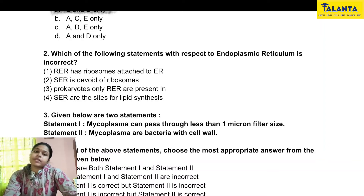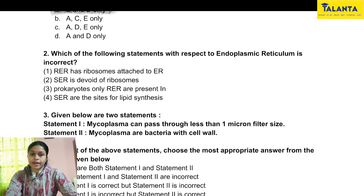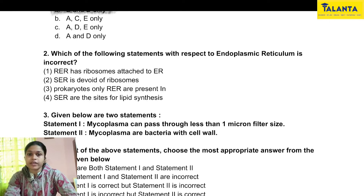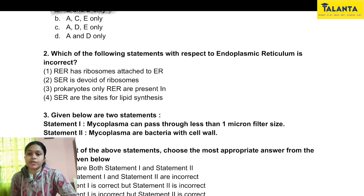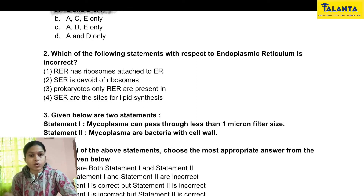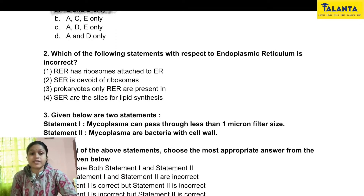The next question: Which of the following statements with respect to endoplasmic reticulum is correct or incorrect? We need to be very careful about this. Option 1: Rough endoplasmic reticulum has ribosomes attached to it — very true. So this is NOT the incorrect option. Option 2: Smooth endoplasmic reticulum is devoid of ribosomes — again, true.